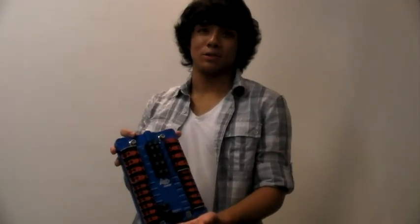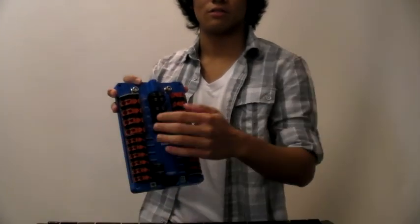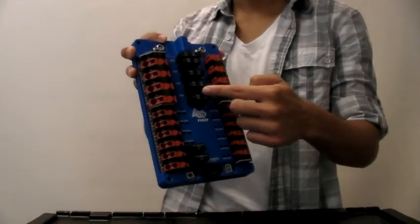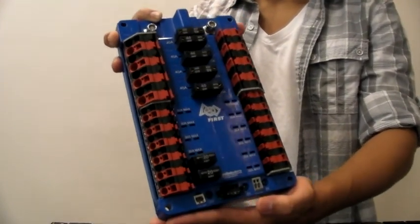This is the power distribution board. It takes power from the battery and distributes it to all the components of the robot. These are the auto-resetting fuses that disconnect the battery from the output, ensuring safety for your components.